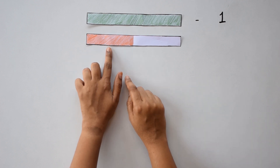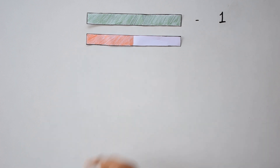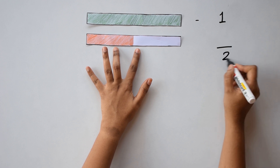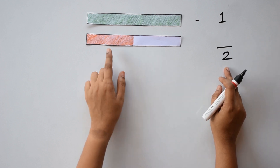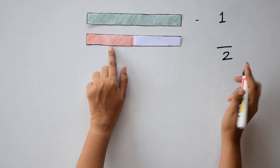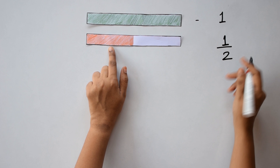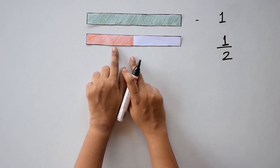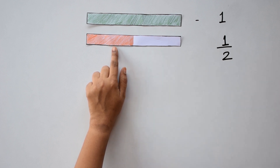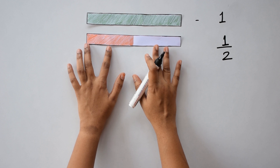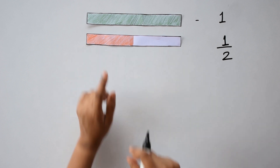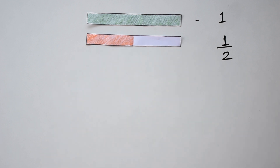What fraction does this shaded part represent? Let's write it down. The total number of parts is two, so the denominator is two, and the number of shaded parts is one, so the numerator is one. So one by two or half is the fraction which is selected here. So how many halves make up a whole? Did you say two? Yes, that's right.